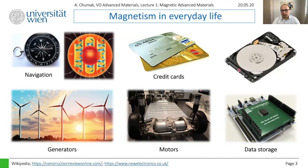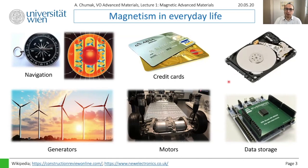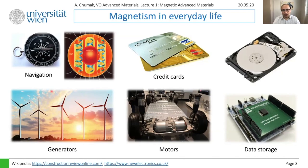There is also magnetic random access memory, which we will discuss in the spintronics part. Surprisingly, the largest revenue in the magnetics industry is not in data storage but in permanent magnets, because permanent magnets are needed for electric motors. Electric motors are used everywhere — for example in electric cars like Tesla — and also in generators for green energy sources.